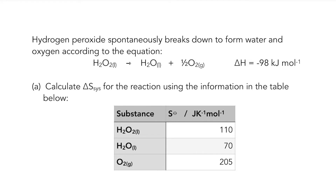Hydrogen peroxide spontaneously breaks down to form water and oxygen. We've got an equation with state symbols and we have the enthalpy change for the reaction — that's enthalpy, not entropy. Part (a): calculate ΔS_system for the reaction using the information in the table below.